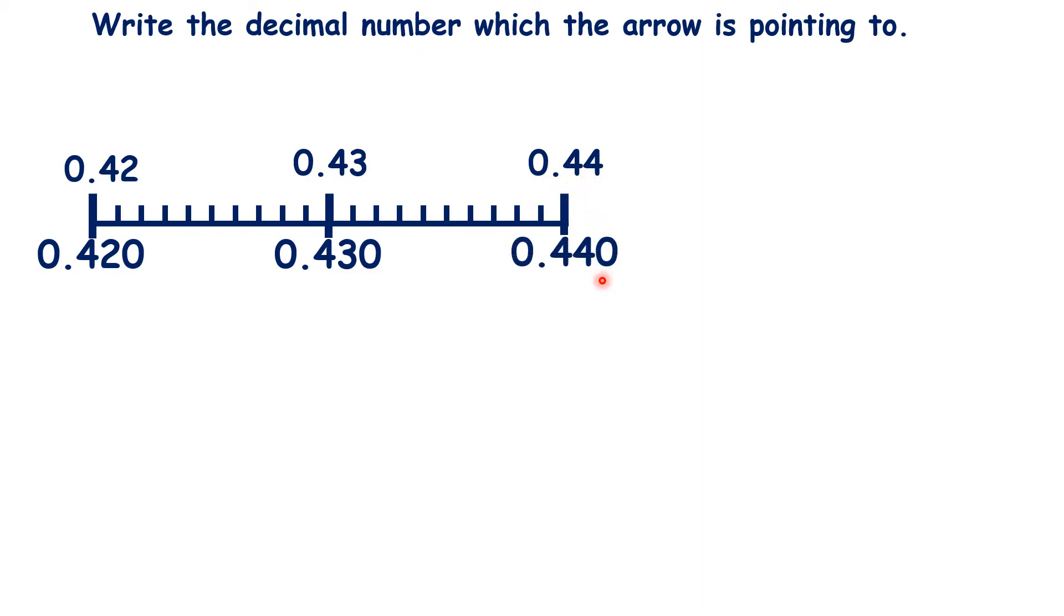We haven't changed the number, because 0.420 is the same as 0.42. All the zero tells you here is that there are no extra thousandths.